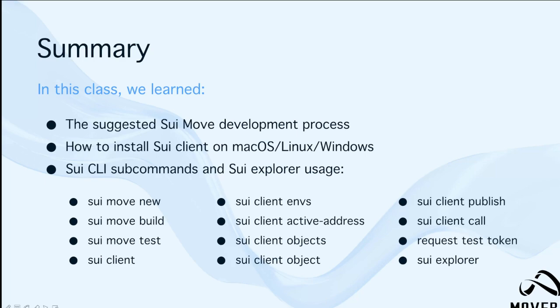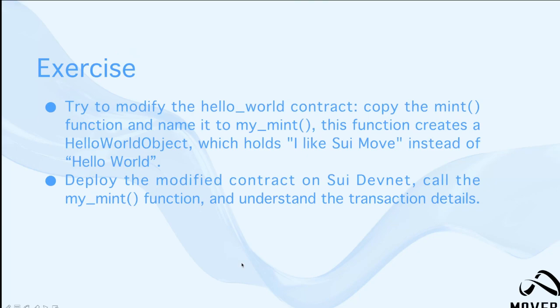Let's do an exercise. You need to try to modify the hello world contract — copy the mint function and name it 'my_mint'. This function creates the hello world object which holds 'I like SuiMove' instead of the 'hello world' string. Then deploy the modified contract on the Sui devnet, call the my_mint function, and understand the transaction details. Pause here for about 10 seconds and try to do the modification and deployment. The reference answer will be given shortly.